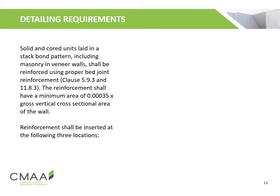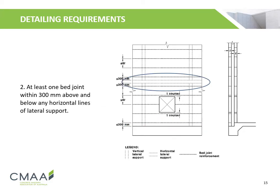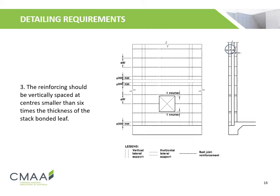Solid and cored units laid in a stack bond pattern, including masonry and veneer walls, shall be reinforced using proper bed joint reinforcement. The reinforcement shall have a minimum area of 0.00035 times the gross vertical cross-sectional area of the wall. Reinforcement shall be inserted at three locations: the first being the first bed joint above or below an unrestrained horizontal edge of the masonry; the second being at least one bed joint within 300 mm above and below any horizontal lines of lateral support; and the third being where the reinforcing is vertically spaced at centers smaller than six times the thickness of the stack bonded leaf.